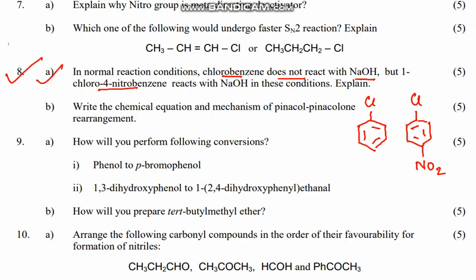So, here we have made two structures. This is chlorobenzene and this is 1-chloro-4-nitrobenzene. When we talk about the reaction with NaOH, we talk about OH⁻. So, this is a nucleophile.